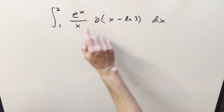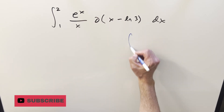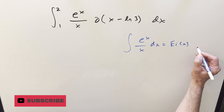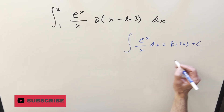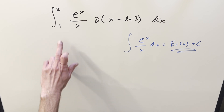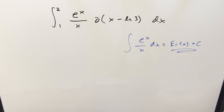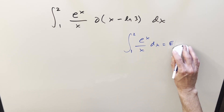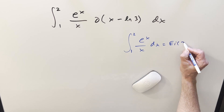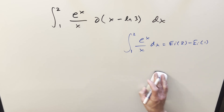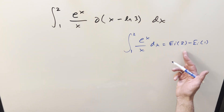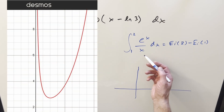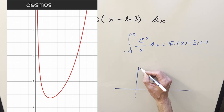Ignore the delta function part for a moment. If we just had the indefinite integral of e to the x over x, this is going to be our exponential integral. We don't have a value for this in terms of standard functions, so we just use it as is. In a definite integral it doesn't get much better — we might write the solution as exponential integral of 2 minus exponential integral of 1. But what's that? We don't have an easy way to actually calculate that exactly.